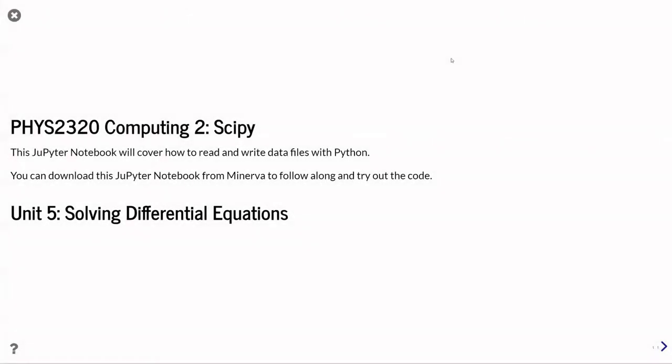So this is unit five of the FIS 2320 Computing 2 video tutorials on SciPy. In this unit, we're going to be concentrating on solving differential equations using Python. If you're a student at the University of Leeds, you should be able to find the notebook and PDF version of this material on Minerva for download, as well as the video.